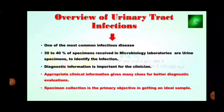The first slide shows an overview of Urinary Tract Infection. It is the most common infection caused by various types of microorganisms such as bacteria, fungi, and viruses. Almost 30-40% of specimens received in microbiology labs are urine specimens to identify these infections. Diagnostic information is important for the clinician because diagnostic tests give information about which types of organisms cause UTI infection, and the clinician treats patients according to the report. Appropriate clinical information gives many clues for better diagnostic evaluation.